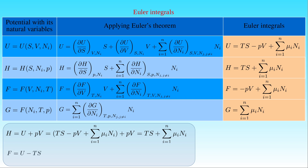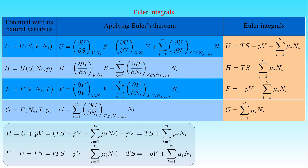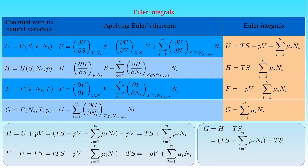Similarly, the free energy F is defined by the internal energy U minus T times S. Substituting the Euler equation gives T times S minus P times V plus the sum of μᵢ times Nᵢ, minus T times S, which yields the equation for F. Finally, the free enthalpy G defined by the enthalpy H minus T times S also follows from the Euler equation, because substituting the expression for H gives T times S plus the sum of μᵢ times Nᵢ minus T times S, reducing to the equation for G.